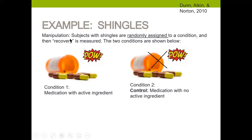Here's the medicine example. Imagine we're developing a treatment for shingles. We start by making sure we have a manipulation — we're going to give people a medicine or not give them a medicine. Subjects with shingles would be randomly assigned to a condition, and then we measure recovery. Condition one is the medication with an active ingredient; half the individuals are randomly assigned to take this medication. Condition two, the control group, is medication with no active ingredients — they're still taking a pill, but there's nothing valuable in it.